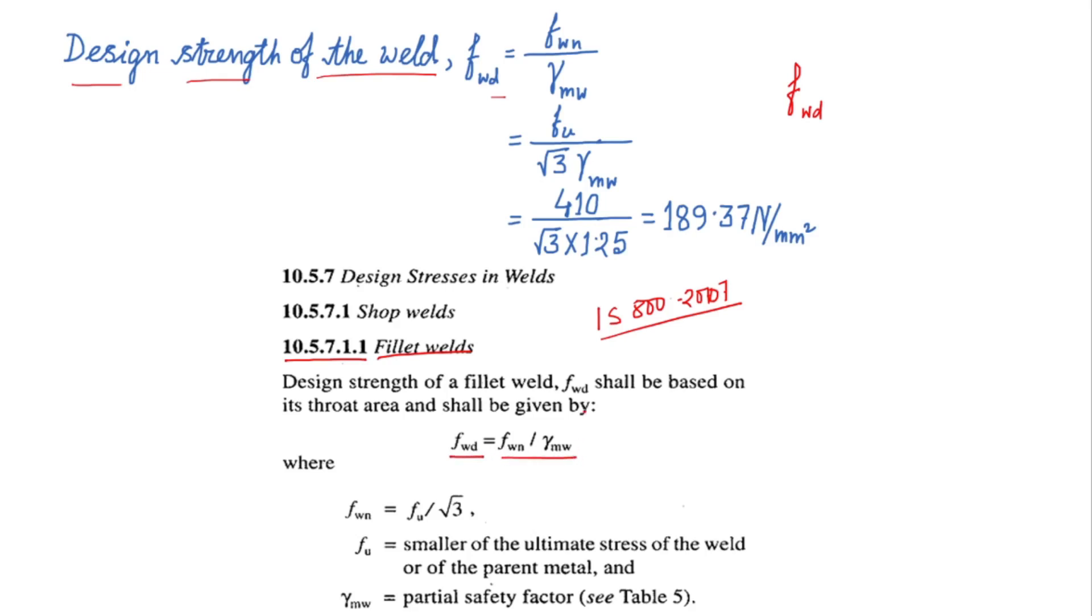The formula is fwd equal fwn by gamma MW. Again fwn is replaced by fu by root over 3, so the formula becomes fwd equal fu divided by root over 3 gamma MW. So if I put the corresponding values, fu is 410 Newton per mm square, root 3, then gamma MW for the shop weld is 1.25, so finally I shall get fwd equal 189.37 Newton per mm square which is the design strength of the weld.